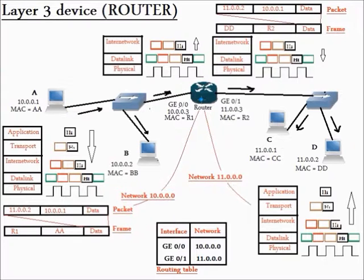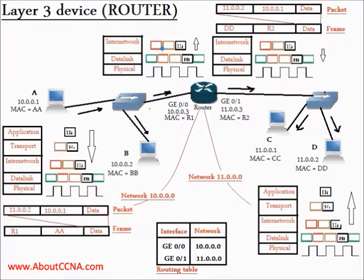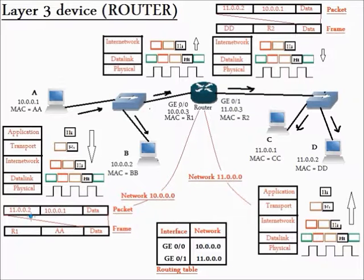When the router receives the data on its interface Gigabit Ethernet 0/0, it will first look at the data link layer and check the destination MAC address. It will find it is R1, which is its own MAC address. Then it will look at the internetworking layer and check the destination IP address. It will find the destination IP address equals 11.0.0.2. The IP 11.0.0.2 belongs to network 11.0.0.0. So the router will look at its routing table and search for 11.0.0.0, and will find this network is connected to its interface Gigabit Ethernet 0/1. So the router now knows that it must send this data over its interface Gigabit Ethernet 0/1.